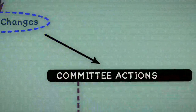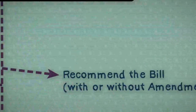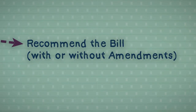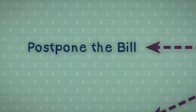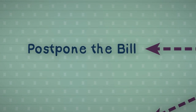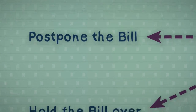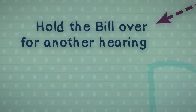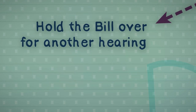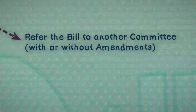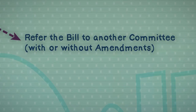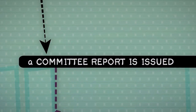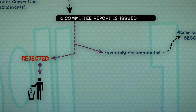A committee can then do several different things. It may recommend the bill with or without amendments. It can postpone the bill indefinitely, essentially killing the bill. It can hold the bill over for another hearing in the same committee, or it can refer the bill to another committee with or without amendments. A committee report is then issued that formalizes the committee's activity.